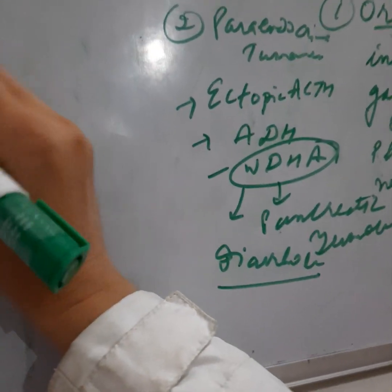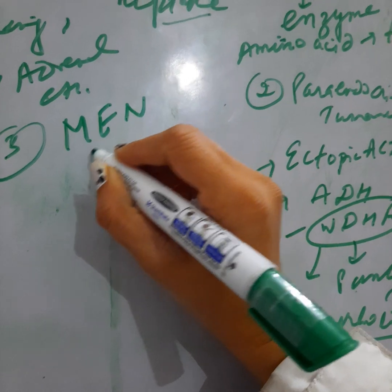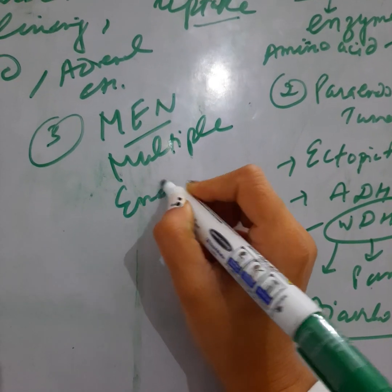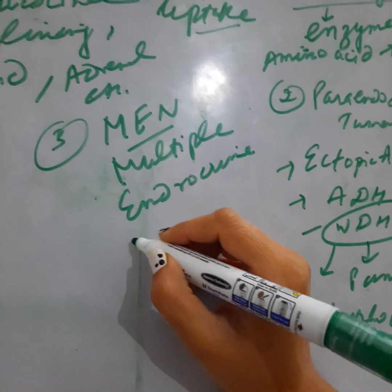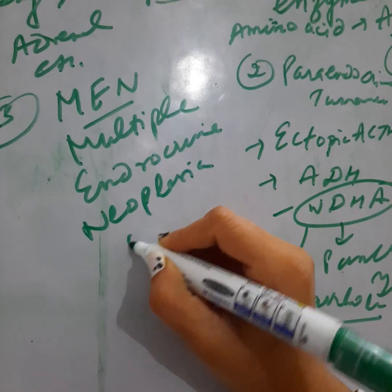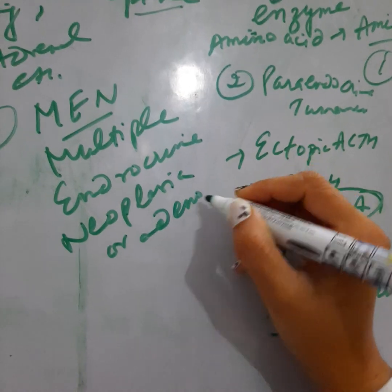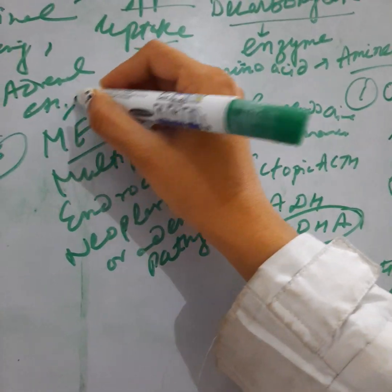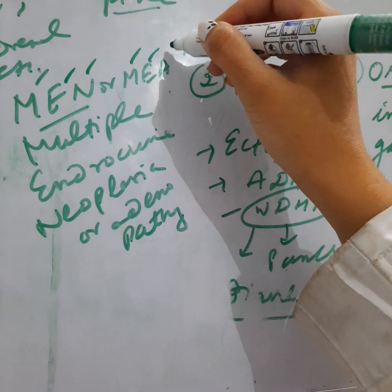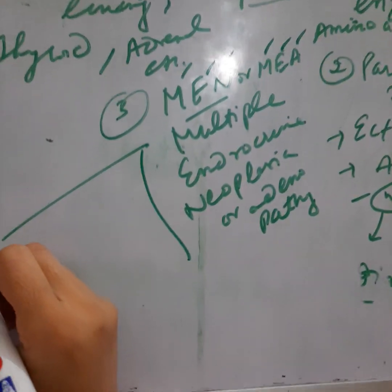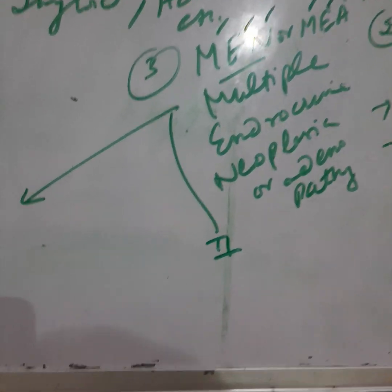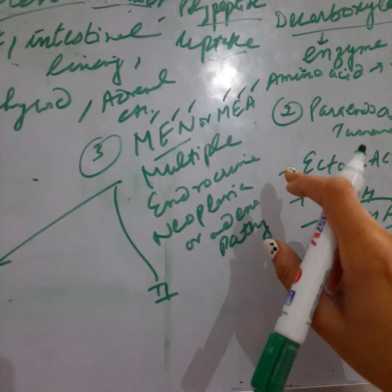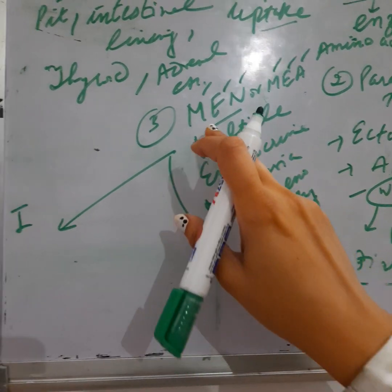The next type of tumors are the MEN tumors — Multiple Endocrine Neoplasia, also called Multiple Endocrine Adenopathy. This condition is of two types: Type 1 and Type 2. The term 'multiple' indicates that there are multiple neoplasias present in different organs of the body.